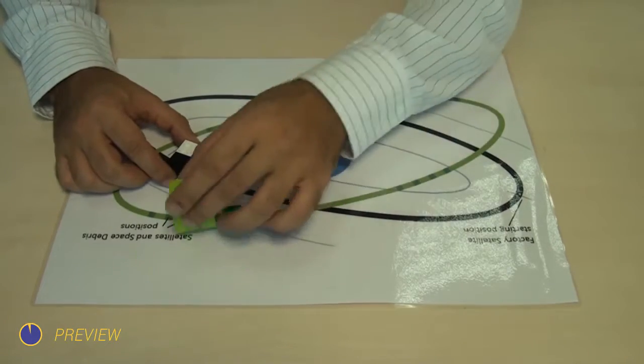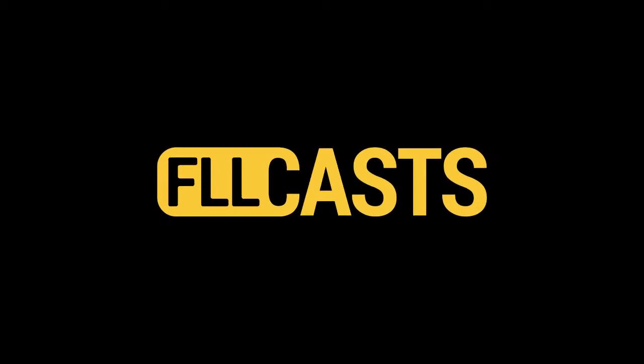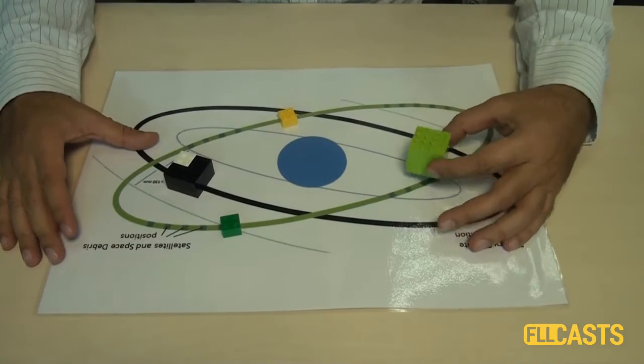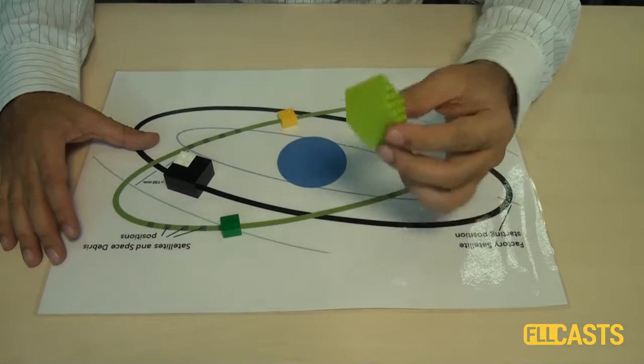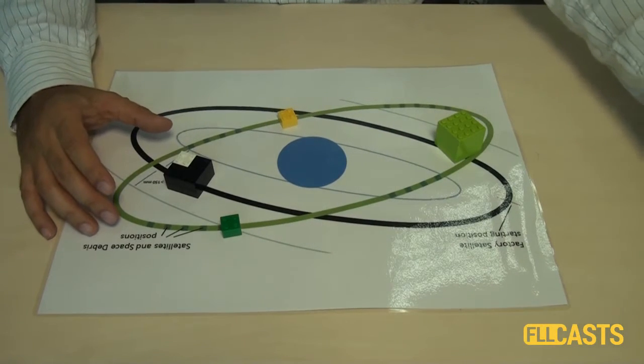And this is the problem that we are solving in the next few videos. The first thing that we should think about is how do we construct the satellite, our satellite, because the factory satellite is given by the organizers of the competition.